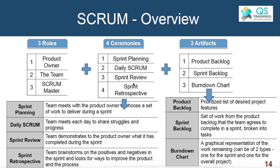There are four major ceremonies in a scrum team. Sprint planning happens on the first day of the sprint. In a sprint planning meeting, the team picks items from the backlog, discusses those items with the product owner, and decides whether to deliver them. They pick only those items from the product backlog which they are comfortable delivering in the current sprint, starting from item number one since the list is in prioritized order.